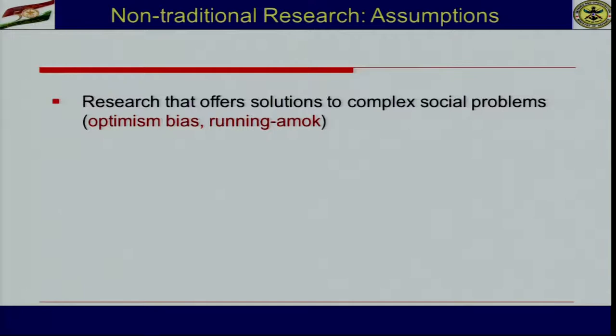We can also do research that offers solutions to complex social problems, like optimism bias — a very important issue. Optimism bias is a form of research wherein people's optimism is not conducive to their well-being. For example, if I believe everybody else will have cancer and I will not, therefore I should not take precautions even if I smoke — that is optimism bias. Many people in our country suffer from diseases because of optimism bias.